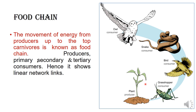That is, energy from producer to top consumer. In the food chain, the first link is producer, the second link is primary consumer, the third link is secondary consumer, and the fourth link is tertiary consumer. It shows linear network links. So the food chain is a linear network of links.